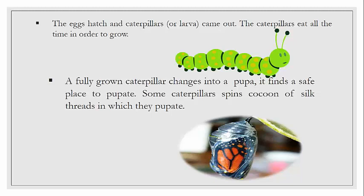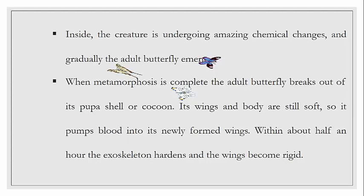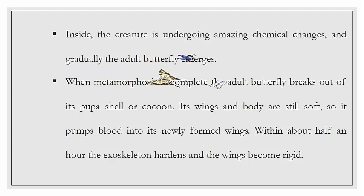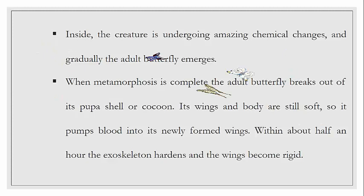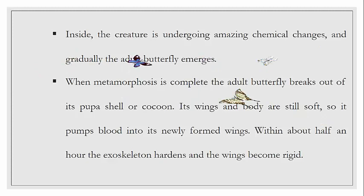Inside the cocoon, the creature undergoes amazing chemical changes. It has closed itself in, is inactive and not feeding, yet inside these natural chemical changes take place — which only Allah can bring about. Gradually the adult butterfly begins to emerge. This entire inactive pupa stage is basically called the metamorphosis stage, and the chemical process occurring inside it is called metamorphosis.